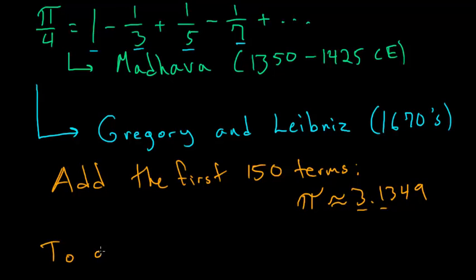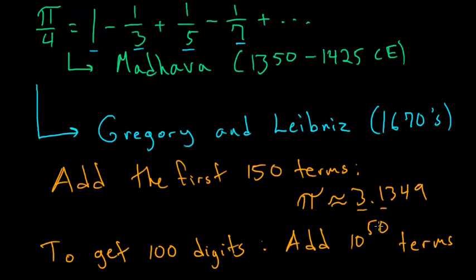To get 100 digits of accuracy, we have to add 10 to the 50th terms. The number 10 to the 50th is a 1 followed by 50 zeros. We have to add up 10 to the 50th of these terms to get 100 digits of accuracy. Mathematicians would say that this series has a very slow rate of convergence.